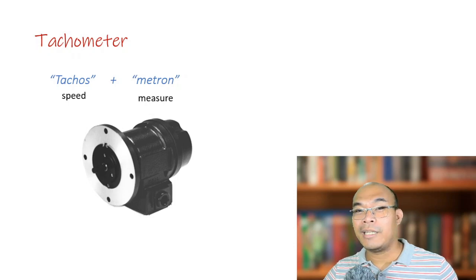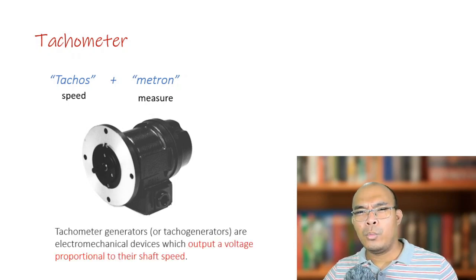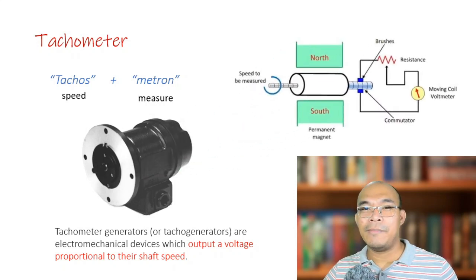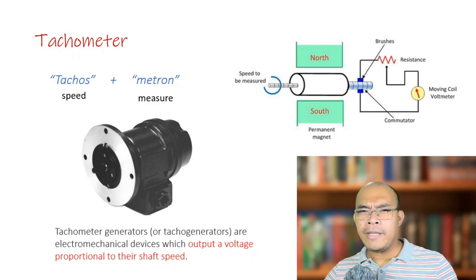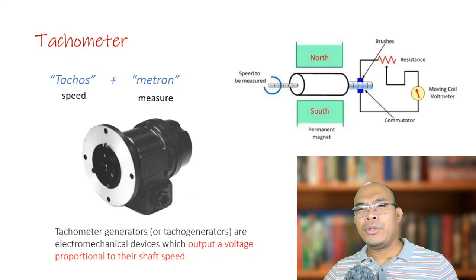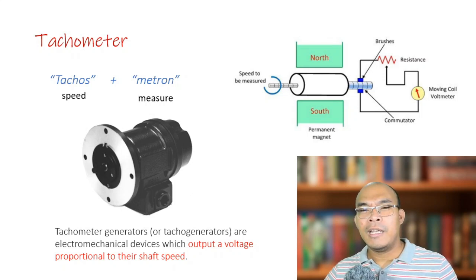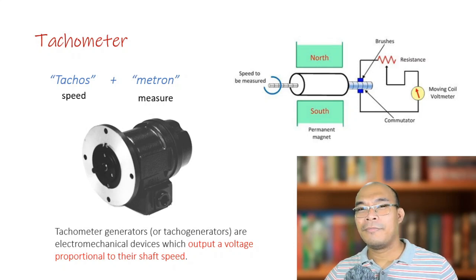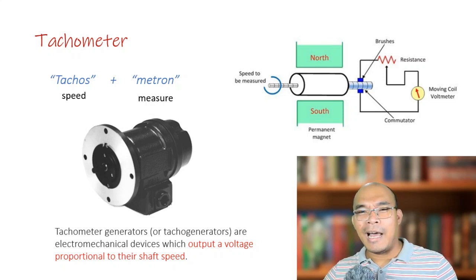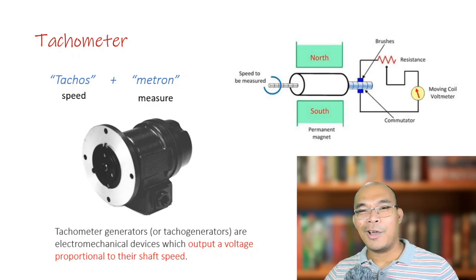This figure here is an example of a tachometer generator or tacho generator, which outputs a voltage proportional to the speed being measured. This figure here is a schematic diagram of a DC tacho generator. Based on that concept, what will happen to the output voltage if the speed of the shaft being measured increases? Since speed and output voltage are directly proportional, the higher the speed being measured, the higher the voltage generated by the tacho generator.